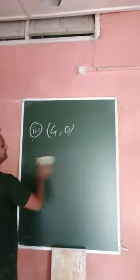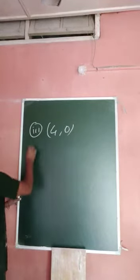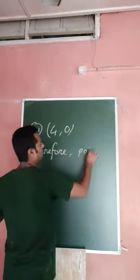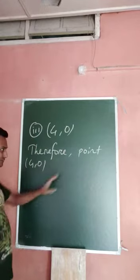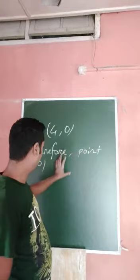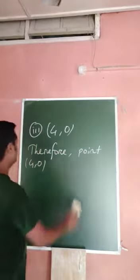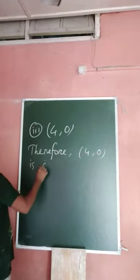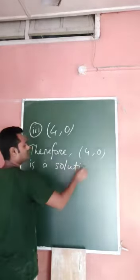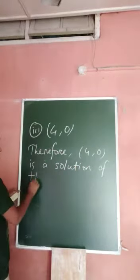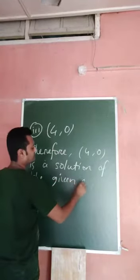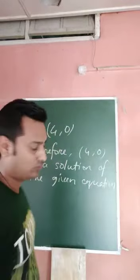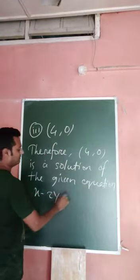Because both the values of x and y are satisfying the given equation, therefore (4, 0) is a solution of the given equation x minus 2y equal to 4.